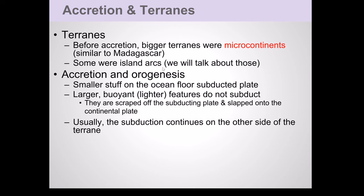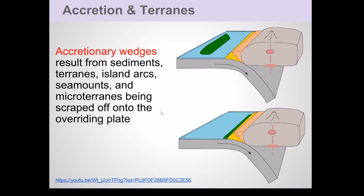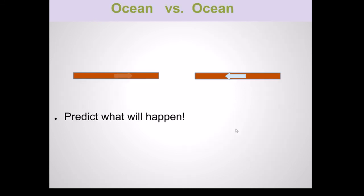Going back to accretionary wedges — a terrane is a large piece that's smeared onto the side of the continent. Accretion is the smearing process, and as you accrete things, you often create mountains — a process known as orogenesis. Larger, buoyant features like microcontinents don't subduct easily and are more likely to get accreted onto the side of the continent. Here you can see the accretionary wedge, the subducting oceanic plate, the continental plate with its volcanic arc, and a microcontinent or island approaching the subduction zone and getting accreted onto the side of the continent.